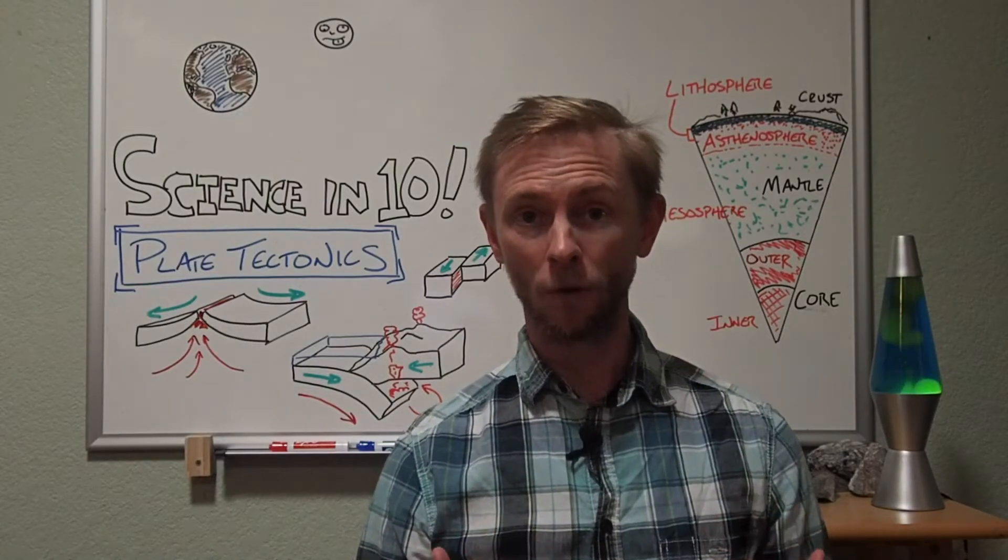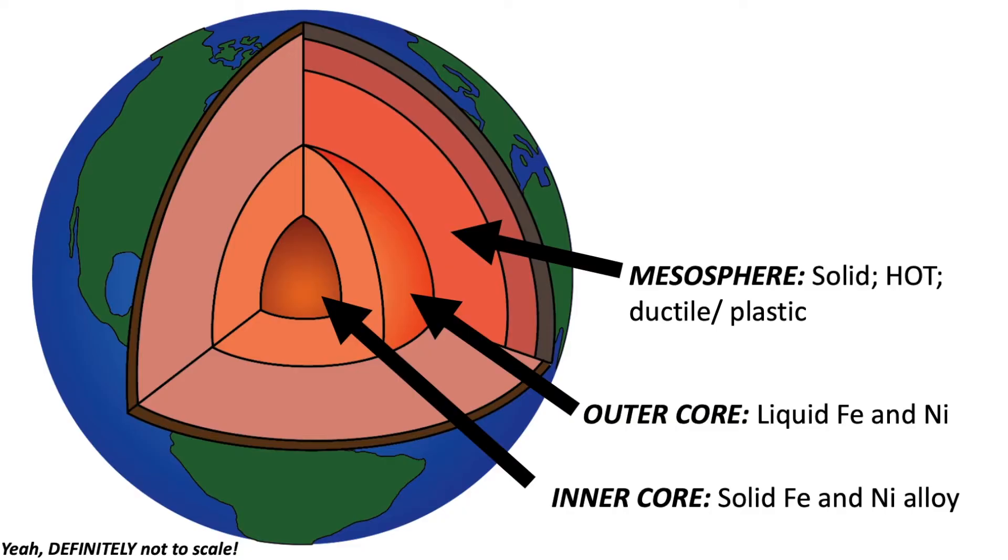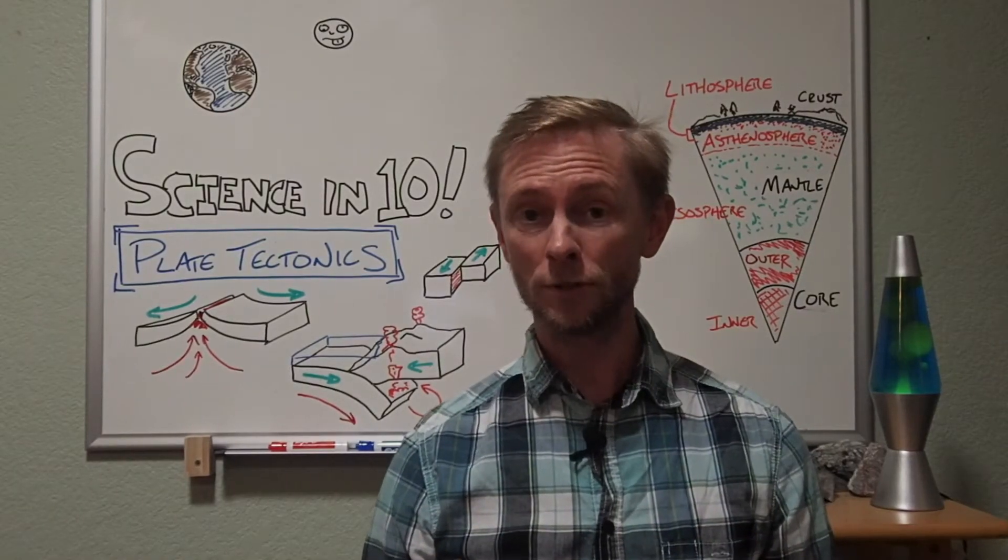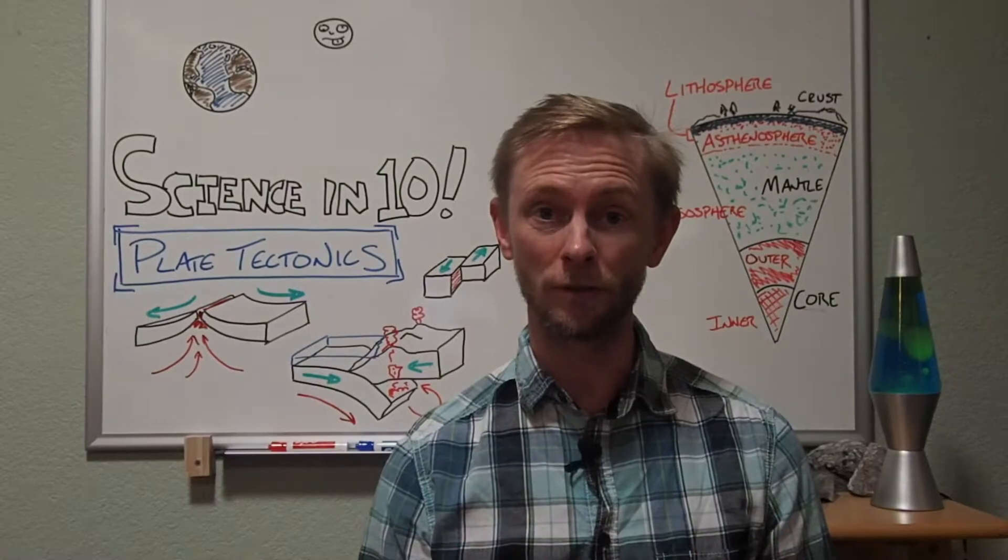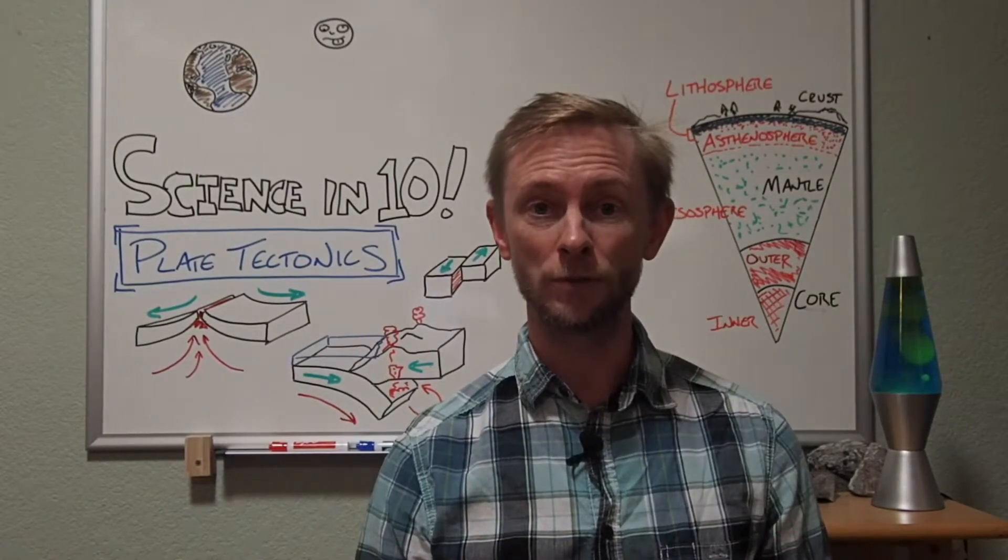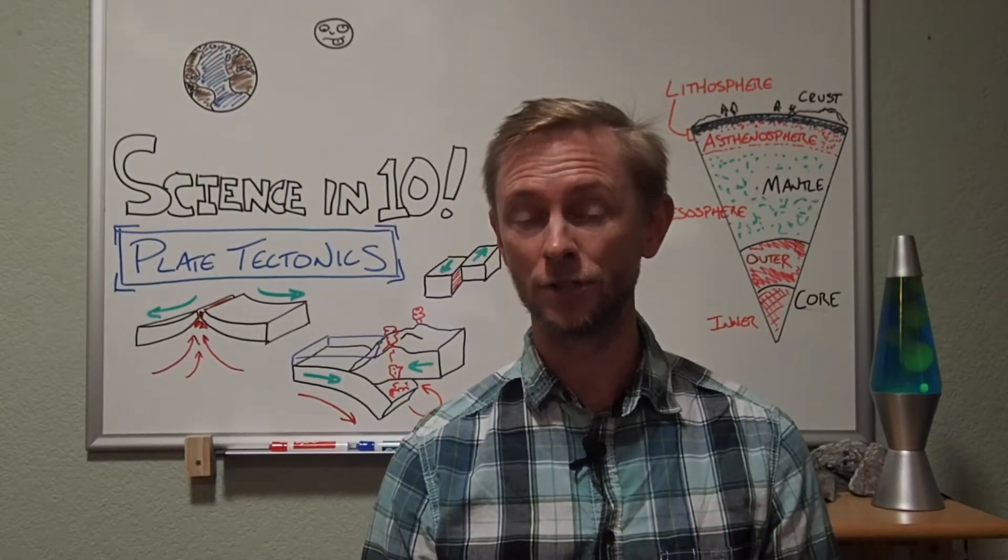Surrounding the outer core, and again composing the bulk of Earth's interior, is the mesosphere, otherwise known as the middle sphere. The mesosphere is incredibly hot, but it's also somewhat mobile. It's ductile. It's a solid, but it flows very slowly over geologic time.